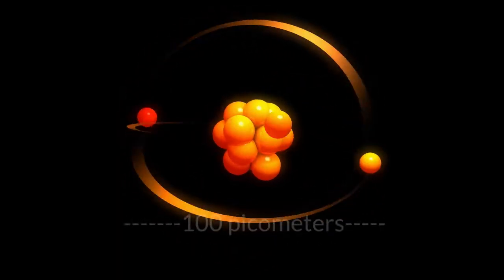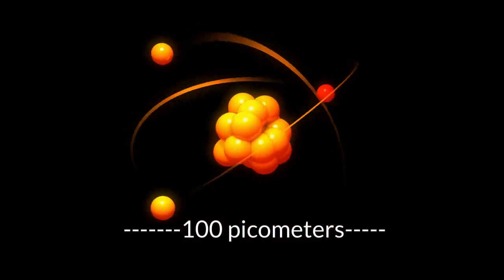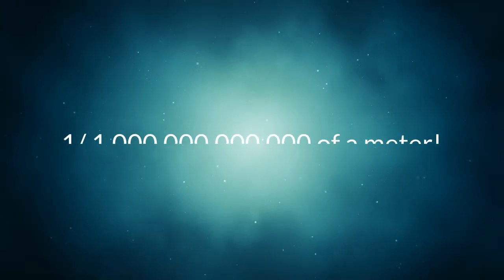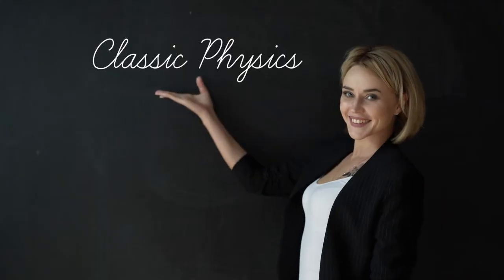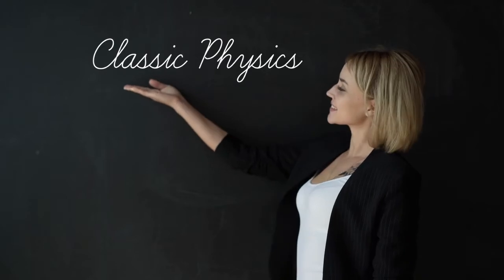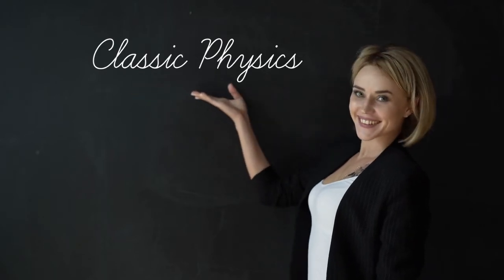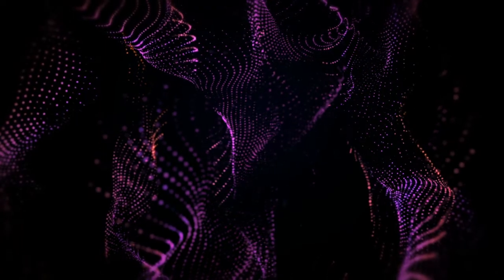One atom is about 100 picometers across. One picometer is one trillionth of a meter. They are so small that predicting their behavior using classic physics won't work due to quantum effects.